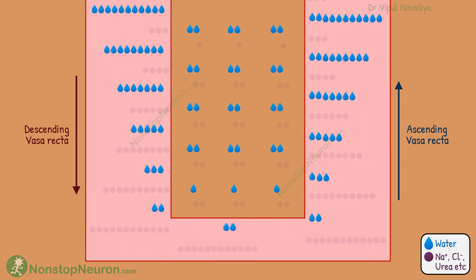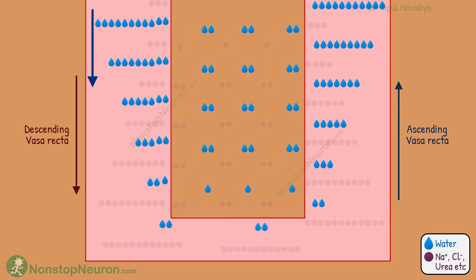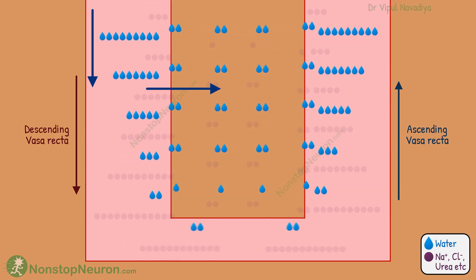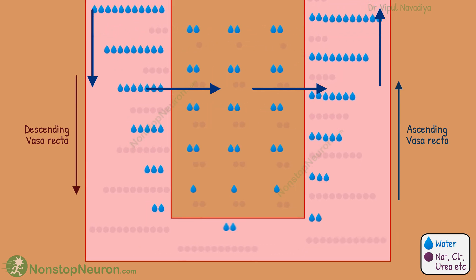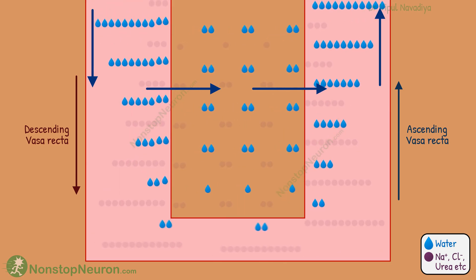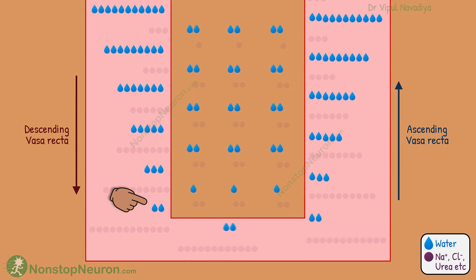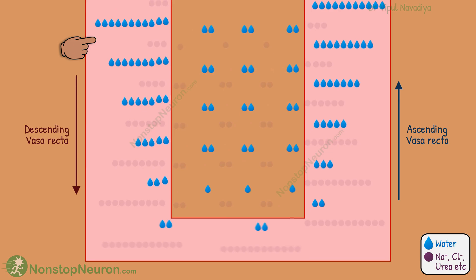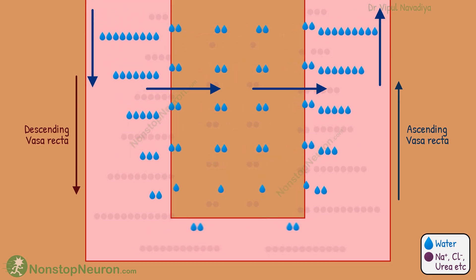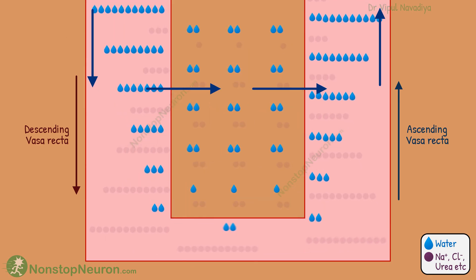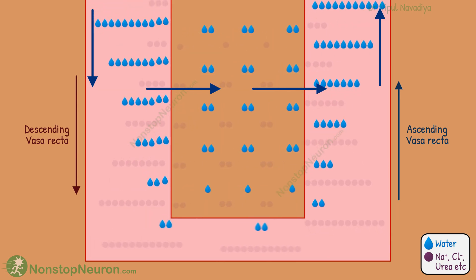Now see what's happening with the water. The water from the descending vasa recta enters the interstitium, is reabsorbed by the ascending vasa recta, and is taken to the cortex right away. Thus water is prevented from going deeper into the medulla. You can see this in the form of fewer water drops at the bottom part compared to their higher number in the upper part. In simple words, the water takes a shortcut by bypassing the deeper part of the vasa recta, which prevents the dilution of deeper fluid.